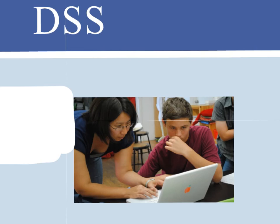Some students have permission through DSS to use cell phones, laptops, or other electronic devices in class. If I don't ask someone to put a device away, you can assume it's because they have prior permission to have it out. Also, if someone leaves class early and I don't say anything to them, you can assume I already knew they had to leave.